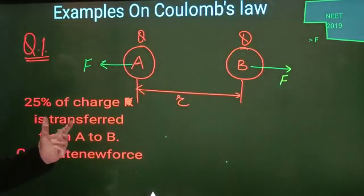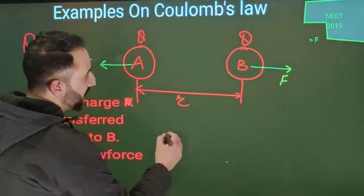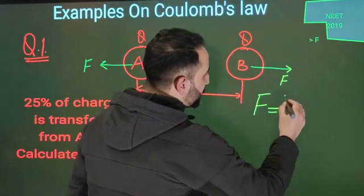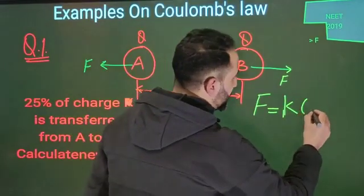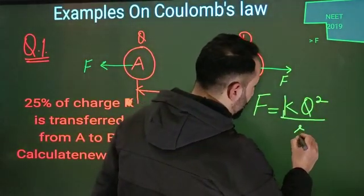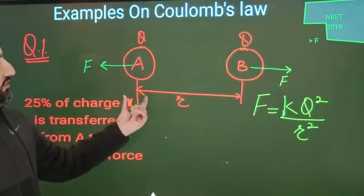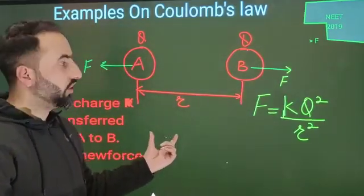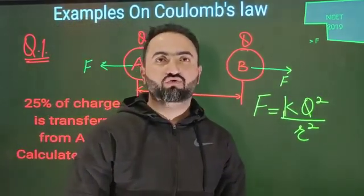Let me write down F. The value of F is equal to k, which is the electrostatic constant, multiplied by the product of the charges Q times Q, which equals Q squared, divided by distance squared R squared. The charge of particle A is Q, the charge of particle B is Q, and the separation between them is R. So the force will be F = kQ²/R².